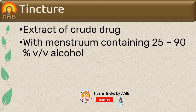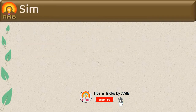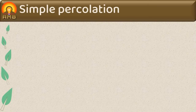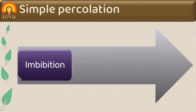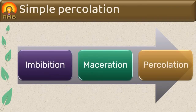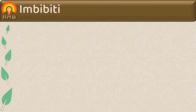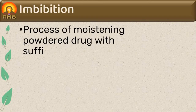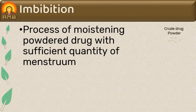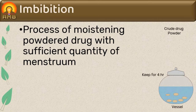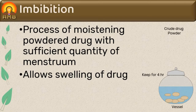Simple percolation involves three steps: imbibition, maceration, and percolation. Imbibition is the process of moistening powdered drug with a sufficient quantity of menstruum and allowing it to stand for four hours in a closed vessel. Imbibition allows swelling of the drug before packing it into the percolator.